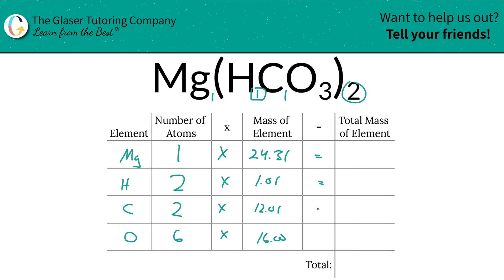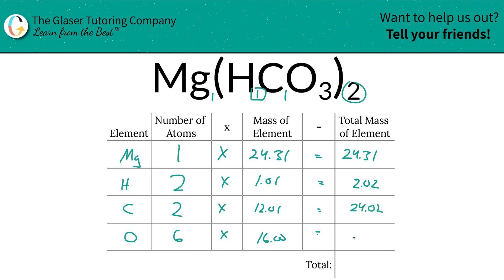Then all we simply have to do is multiply across each row to find the total mass of each element in the compound. The total mass of magnesium is simply 24.31, the total mass of hydrogen is 2.02, the total mass of carbon is 24.02, and the total mass of oxygen is 96. Then to find the total mass of the entire compound, just add this column up — the molar mass of magnesium hydrogen carbonate is 146.35 grams per mole.